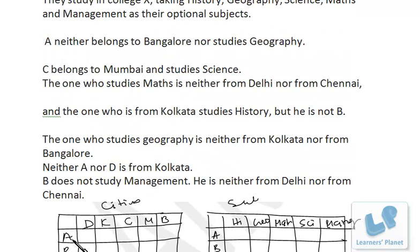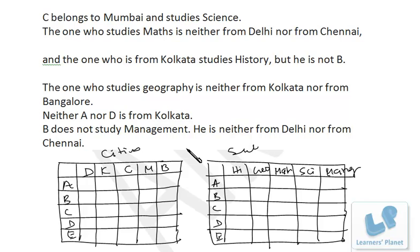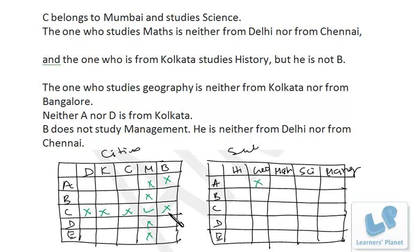Now let's read the statements and fill up the table. Statement: A neither belongs to Bangalore nor studies Geography — so A is not Bangalore and not Geography. Statement: C belongs to Mumbai and studies Science — so we mark C for Mumbai and Science, and cancel all other options for C.